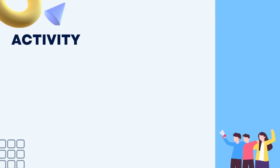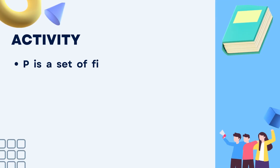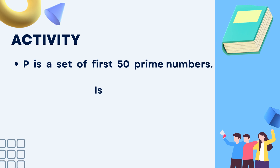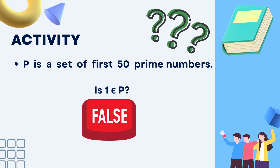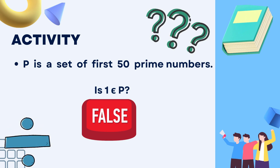In the next activity, P is a set of the first 50 prime numbers. It's asking you if element 1 is a member of set P or not. We should know what prime numbers are — prime numbers are numbers that can be divided by themselves or 1.